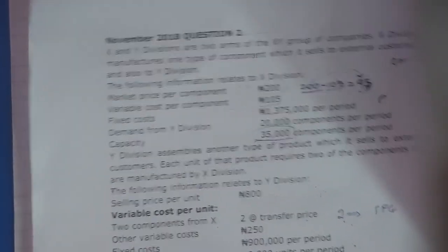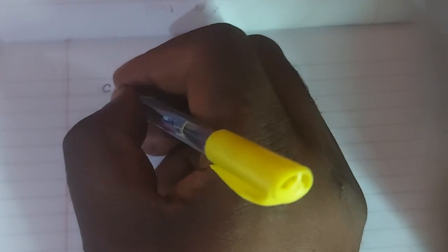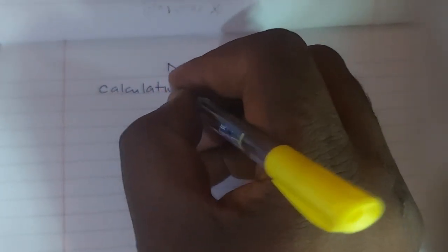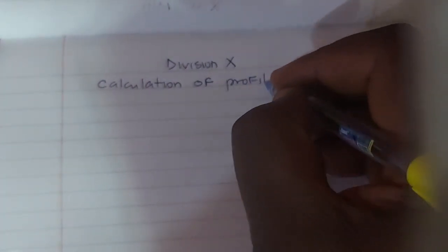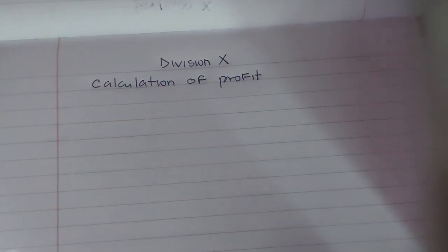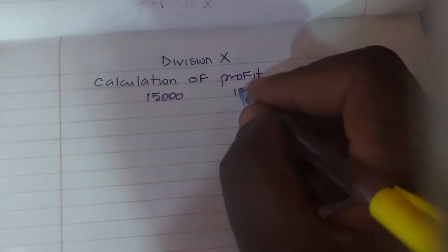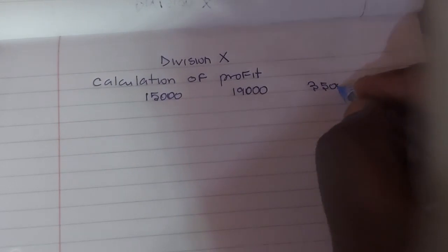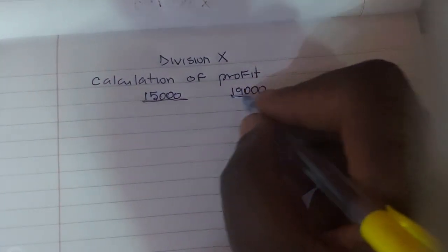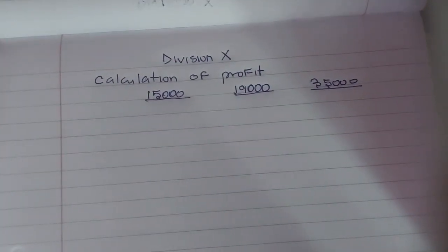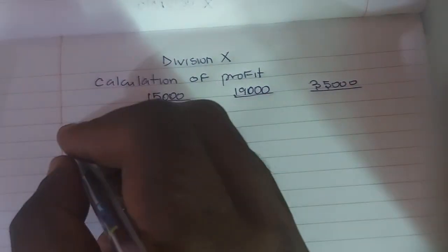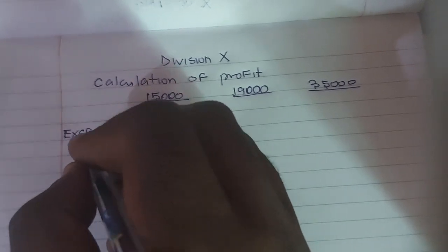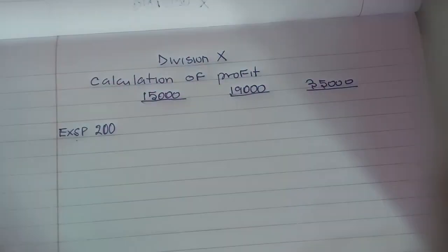Let's get started. You are going to determine the external demand first. Write: Division X — the selling division. Calculation of profits. Let's look at the level of external demand. When the level of external demand is 15,000, when it is 19,000, and when it is 35,000 — look at these three scenarios. The capacity is 35,000 components. The external selling price is given as 200 Naira. The variable cost per component is 105.